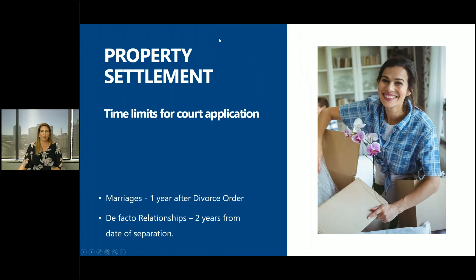There is a time limit for applying for property settlement. If you're married, it's one year from your divorce becoming final — and since you can't apply for a divorce until you've been separated for 12 months or more, that's at least a two-year period for marriages. For de facto relationships it's two years from the date of separation. That's the time limit for applying to court. If we're trying to negotiate a settlement and someone's running out of time, we might file an application with the court just to preserve their rights.